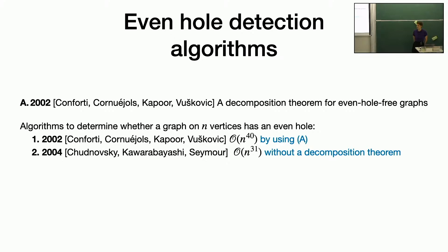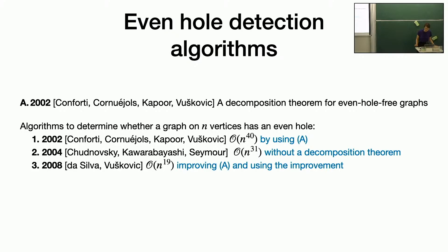Our approach for long even holes uses a somewhat similar methodology, so hopefully by the end of the talk you'll be able to trust me when I say it's more direct. The fact that it uses this more direct approach without using an even-hole-free graph decomposition makes it more adaptable to other settings — it's able to do the shortest long even hole problems with a similar technique. Also the long even holes problem doesn't depend on the decomposition theorem for even-hole-free graphs, because the equivalent for long even holes would probably need a decomposition theorem for graphs that don't contain a long even hole, which does not exist. So this seems to be the more flexible approach, but it's not the fastest.